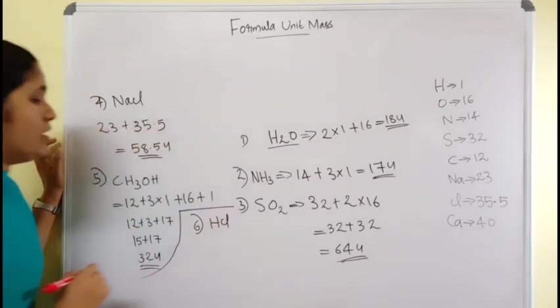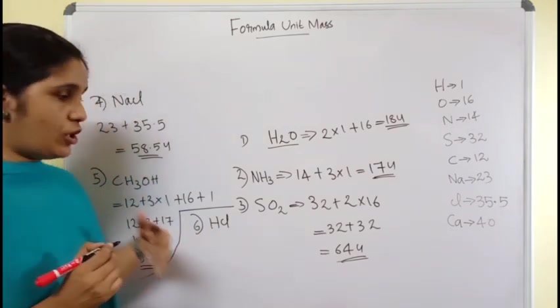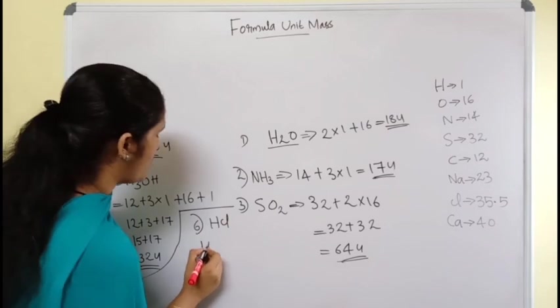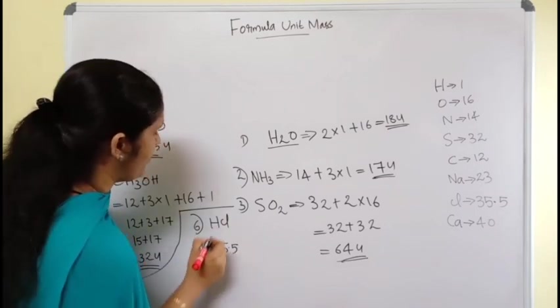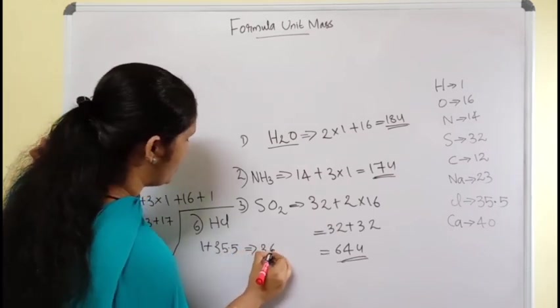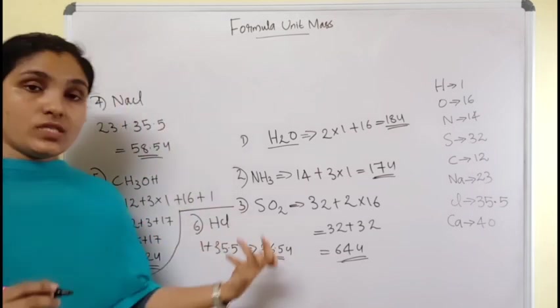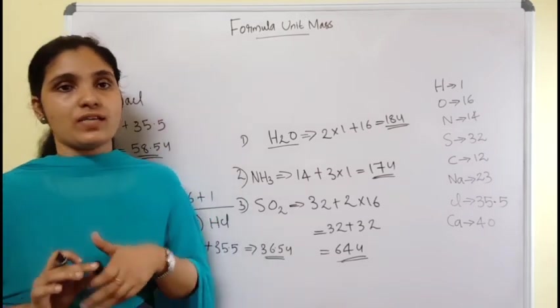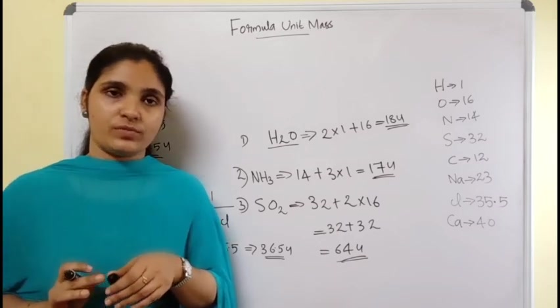The sixth compound is hydrochloric acid, HCl. Hydrogen's mass is 1 and chlorine's atomic mass is 35.5. So: 1 + 35.5 = 36.5 u. This is how we calculate the formula unit mass of different chemical compounds.